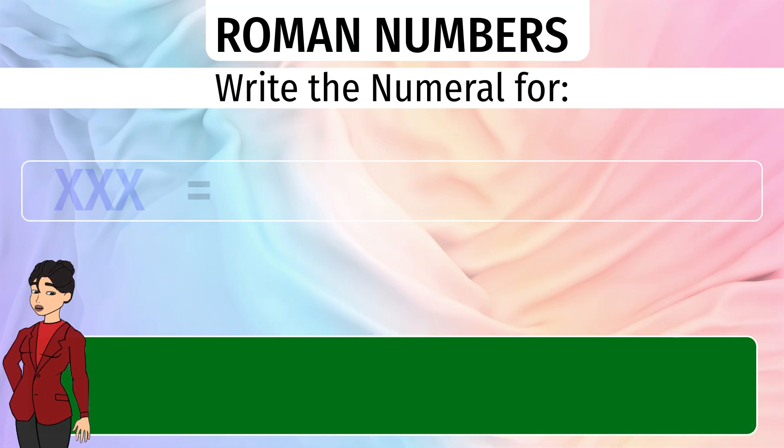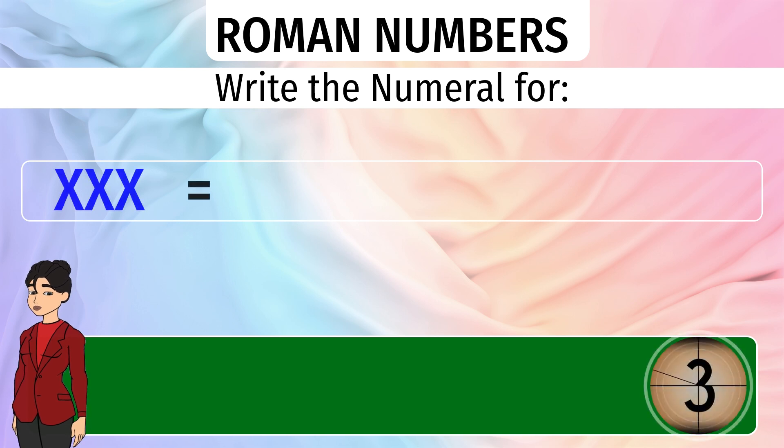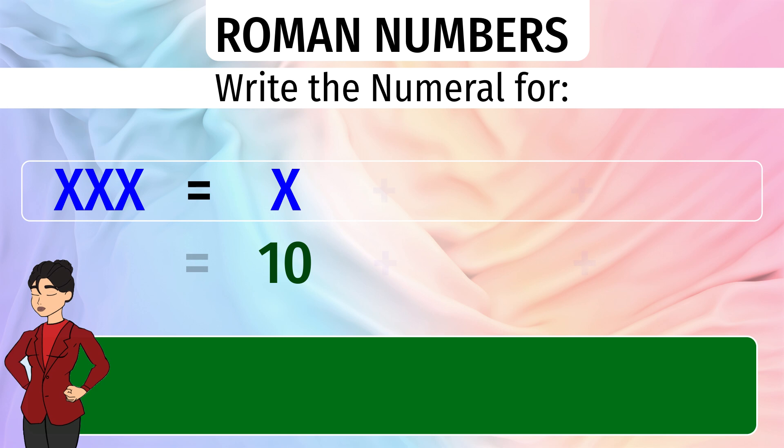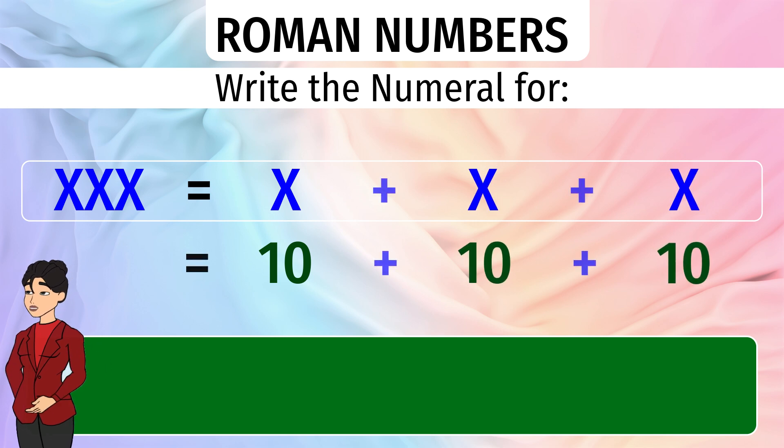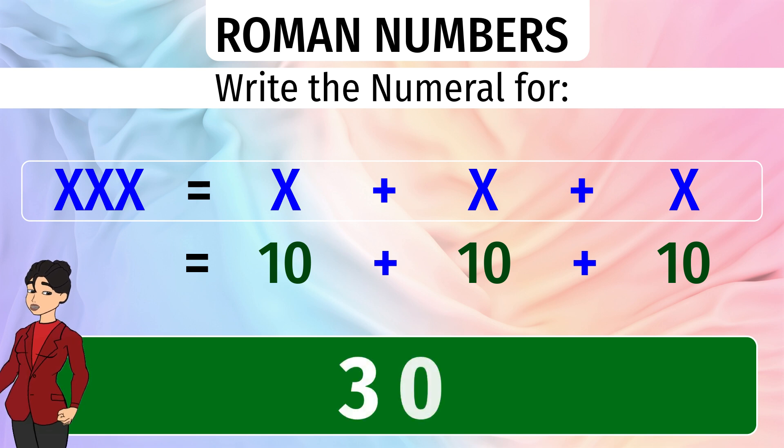What number does XXX stand for? A symbol repeated up to 3 times gets added. So XXX will equal X plus X plus X. The answer is 30.